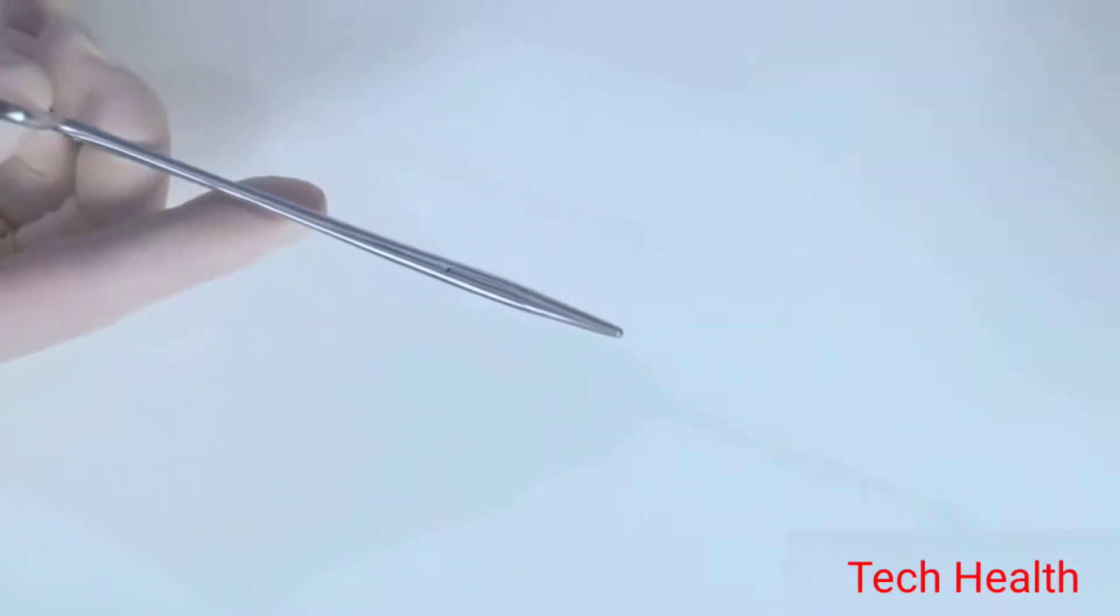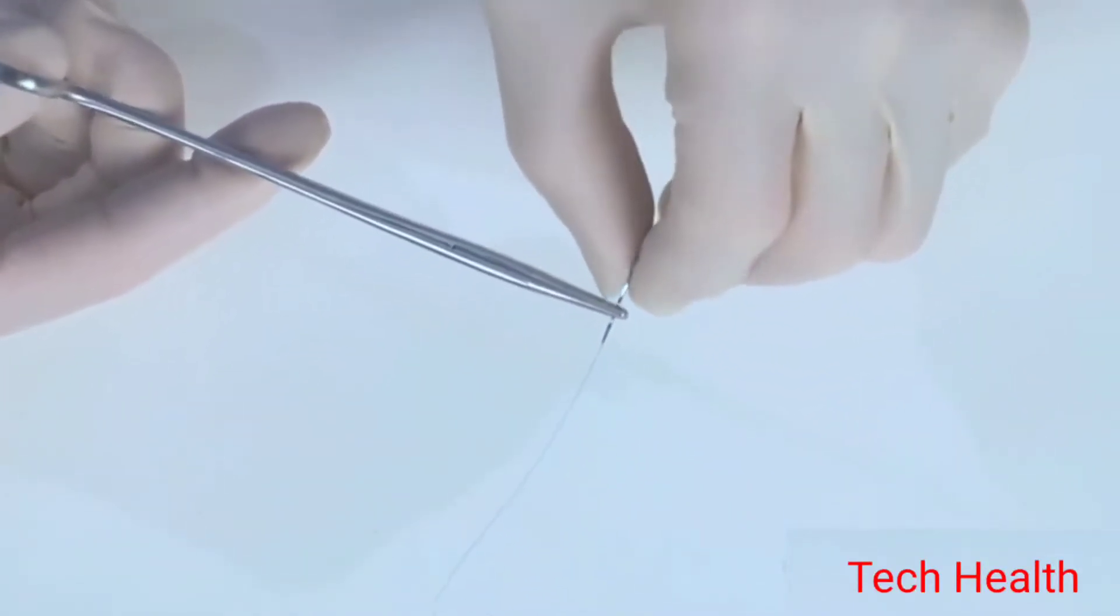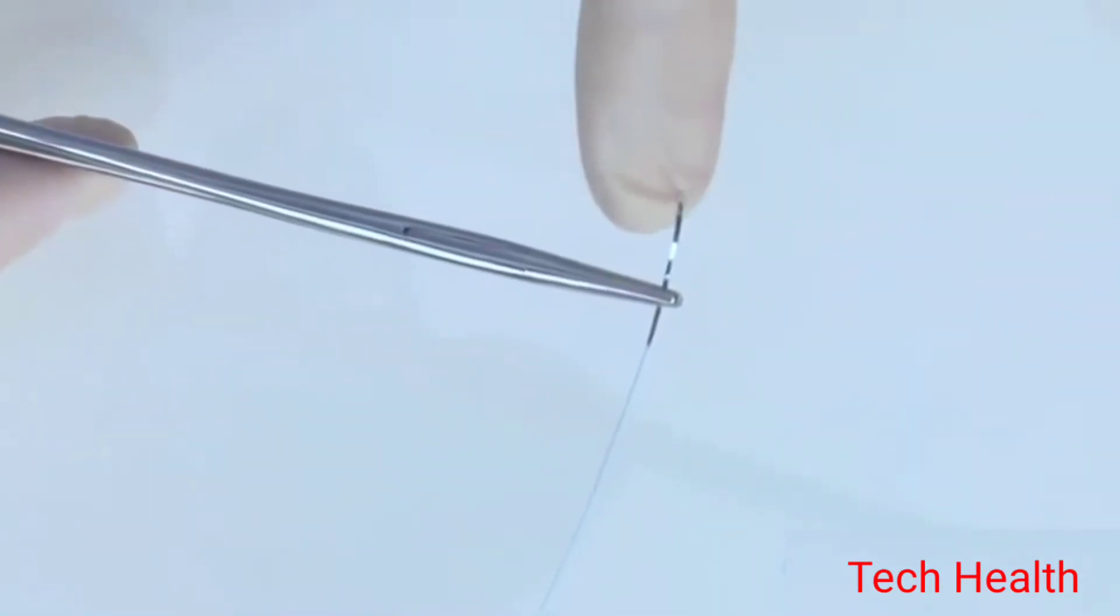In order to practice a tie, load a needle at a right angle and grasp it two-thirds of the way down. Hold the long end of the suture with the needle on it straight up from the point where the suture was placed.